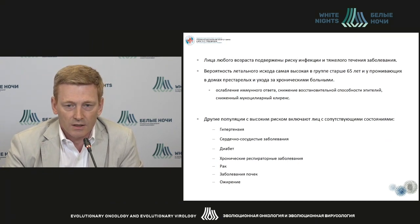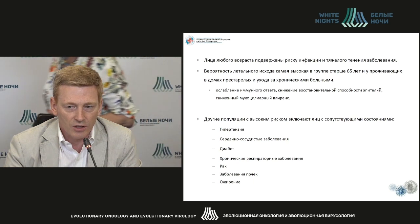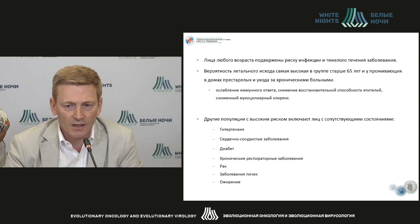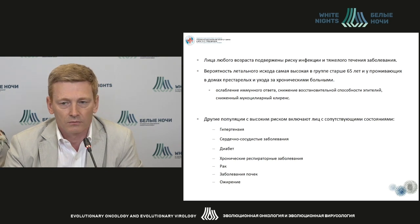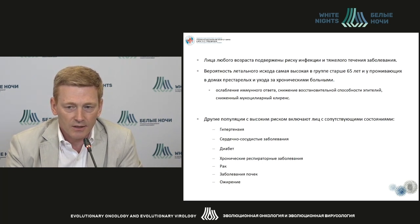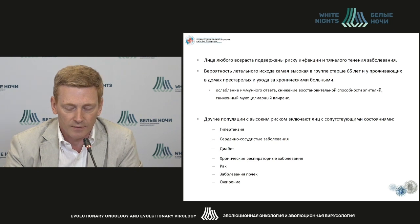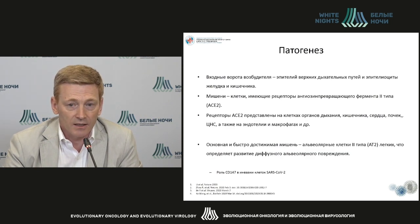Regarding susceptibility: there is a clear age dependence, as we can see from our clinical data. Severe disease and death occur across different age groups, but the probability of mortality is highest in those aged 65 and older, particularly those living in residential care homes and those suffering from chronic diseases. The main comorbidities involved are impairment of the cardiovascular system, impairment of the respiratory organs, and metabolic disturbances.